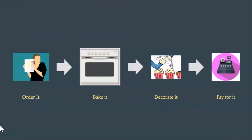However, instead of talking about the process in a supermarket or software development, let's use cakes to illustrate how the Theory of Constraints works. Say you own a bakery and you make cakes. Let's say your bakery has generally four steps in the process: ordering, baking, decorations, and cashier.